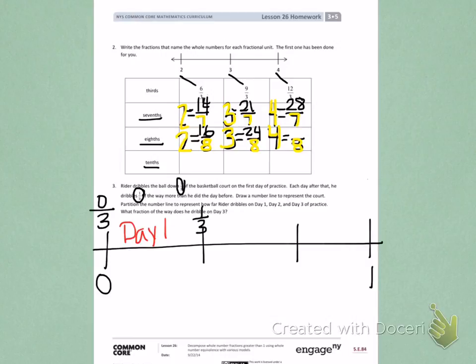On day 2, he's getting better. So on day 2, he can dribble 1 third and another 1 third. So he's able to dribble 2 thirds of the way down the court. That's for day 2. Now, day 3 of practice, he's gotten even better. So he can not only dribble 1 third of the way or 2 thirds of the way. He can dribble all the way down the court, which is 3 thirds of the way.